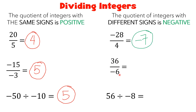Another example here: 36 divided by negative 6. So they have different signs. 36 divided by 6 is equal to 6. Then since they have different signs, your answer must also be negative. So we got negative 6.